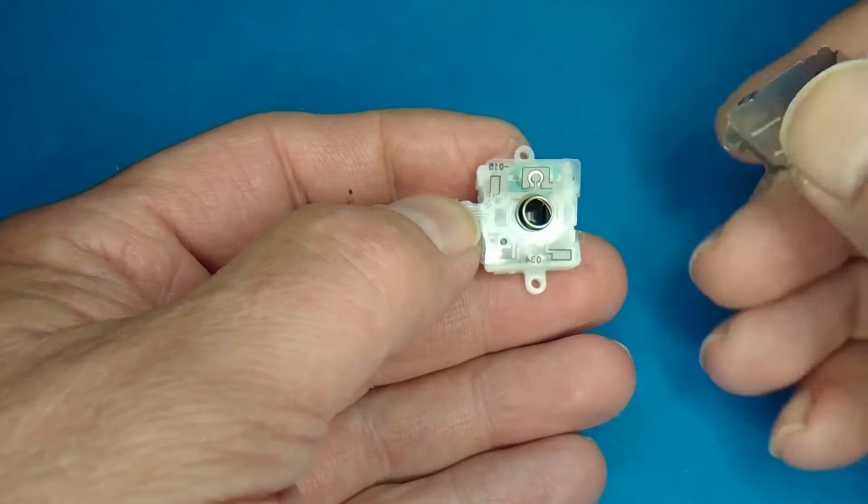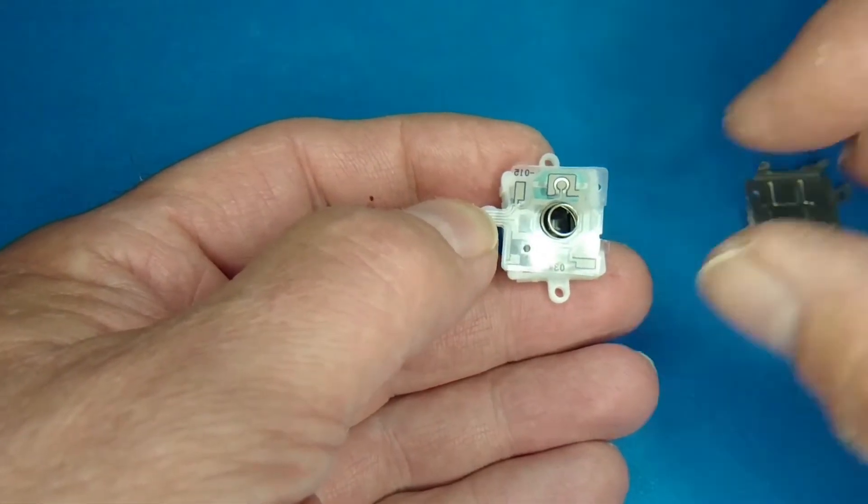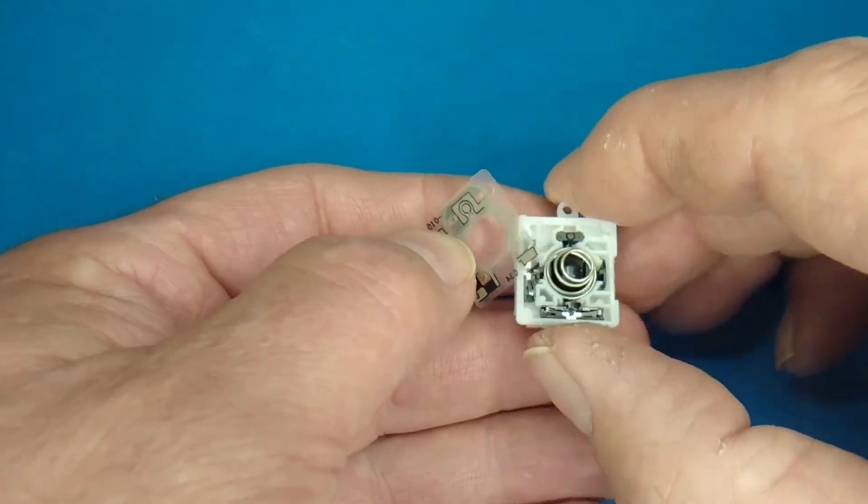And then there's a circuit card there. And make sure you get the orientation of the way that circuit card goes in there.